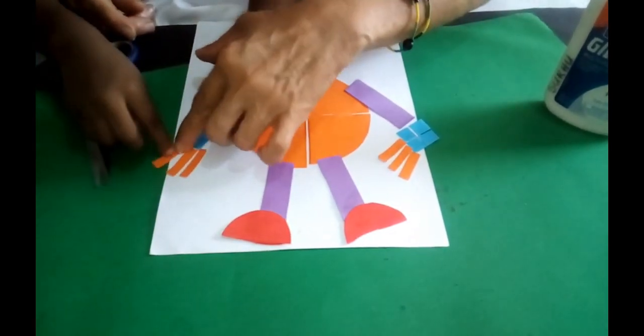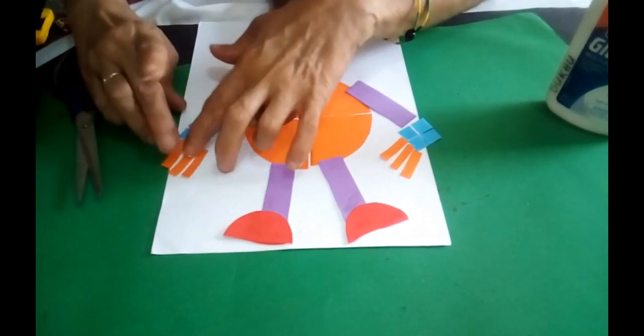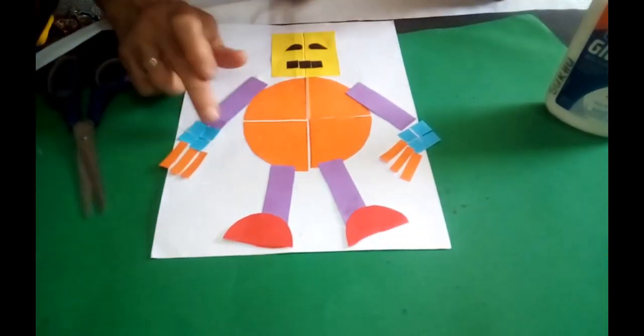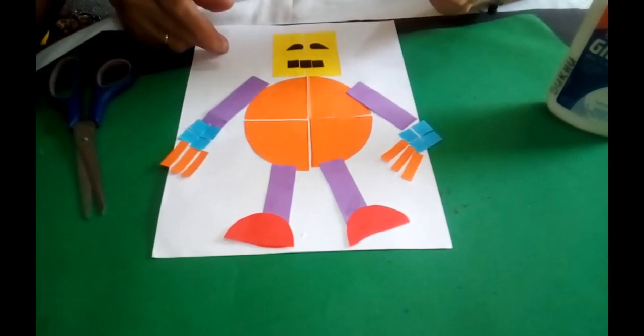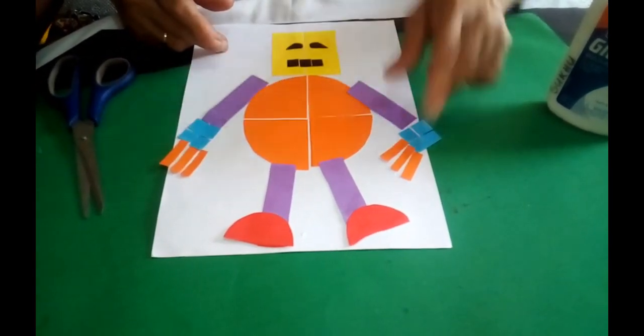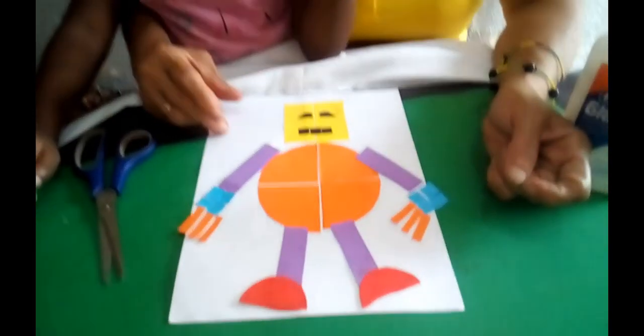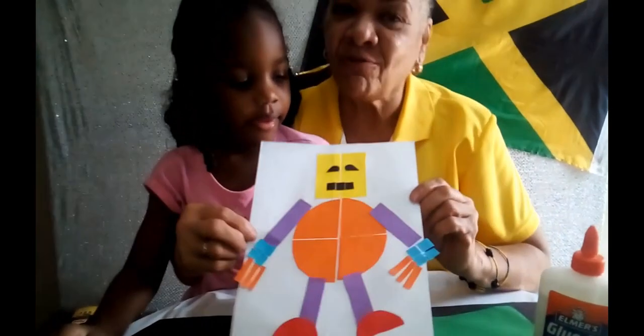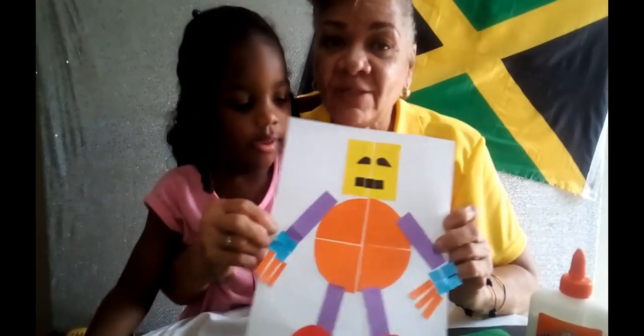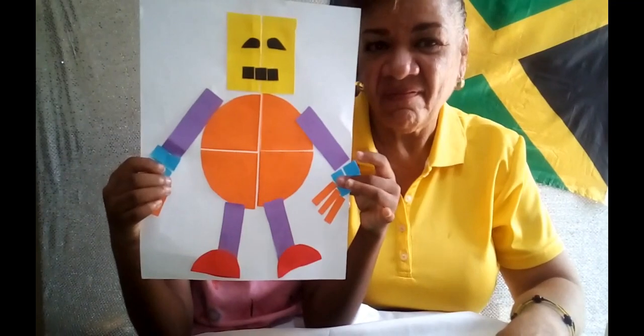So, let's just think about it again. Quarters give how many equal pieces? Four. Halves give how many equal pieces? Two. And thirds give how many equal pieces? Three. Absolutely. And so now, our fraction robot is ready to go. Go, go, go. Beep. I'm a robot. Bye.